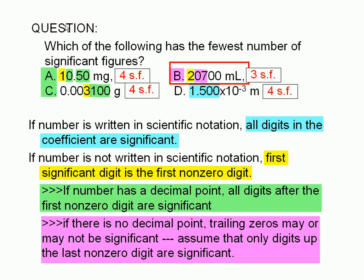The correct answer is B. It has only three significant figures. The other choices have four.